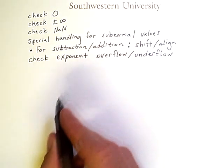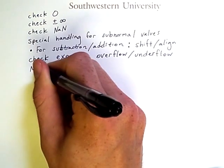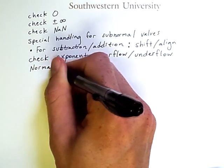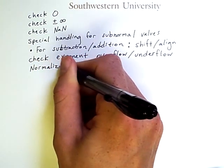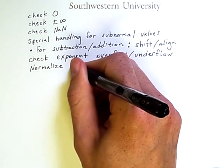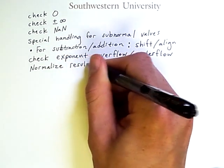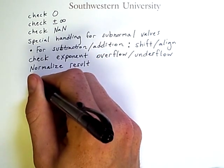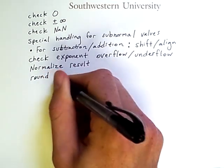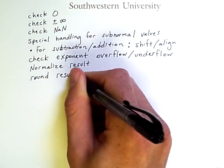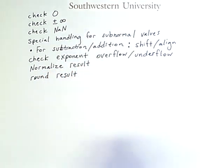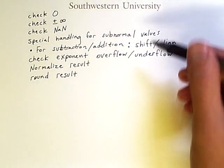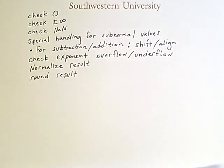If we get results with exponents that are too big or too small, then the result may be infinity and maybe not a number. It depends on the specific circumstances. If all of this works out without any errors, we have to normalize the result, unless it already happens to be normalized, and after normalizing it, we need to round the final result, because we can only store so many bits in the significand.